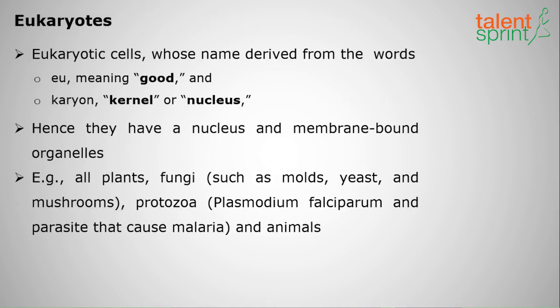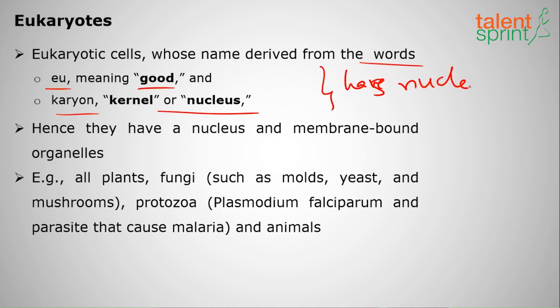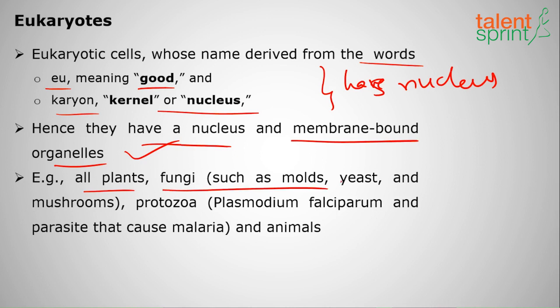Eukaryotes derive their name from two Greek words: 'eu' meaning good, and 'karyon' meaning nucleus. So they have a nucleus, and also have membrane-bound organelles. All plants, fungi such as molds, yeast, and mushrooms, protozoa — for example, Plasmodium falciparum, the mosquito-borne organism — and also animals have nuclei and are therefore called eukaryotes.